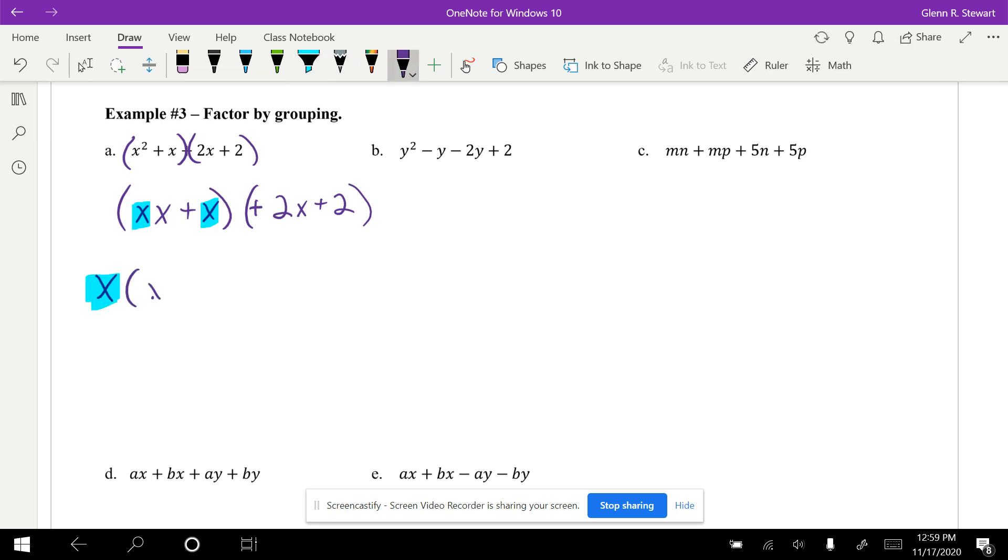I'll then be left with (x + 1). These both share a +2, so I'm going to bring that +2 out front, and then I'll also be left with (x + 1). They have that placeholder whenever I take everything out front.